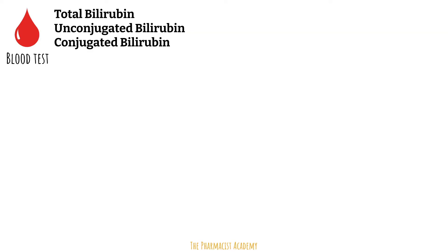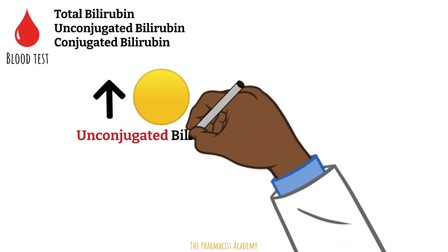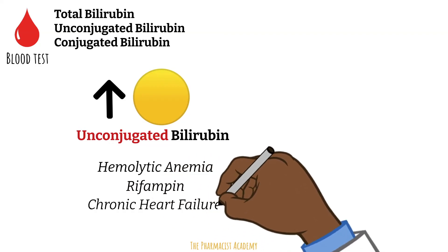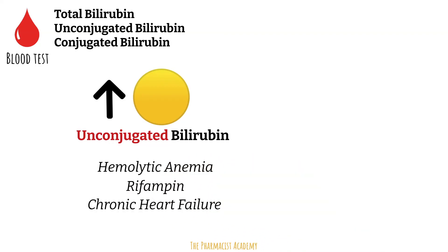Let's focus on elevated bilirubin, since low levels of bilirubin are not usually a clinical concern. Elevated bilirubin leads to jaundice, or yellow discoloration of the skin and eyes. When the unconjugated bilirubin is elevated, it may be due to hemolytic anemia, where there is an accelerated breakdown of red blood cells. Rifampin impairs the hepatic uptake of bilirubin into the hepatocytes, so it can't be conjugated. Chronic heart failure tends to decrease hepatic blood flow, so the unconjugated bilirubin doesn't reach the liver for it to get conjugated.